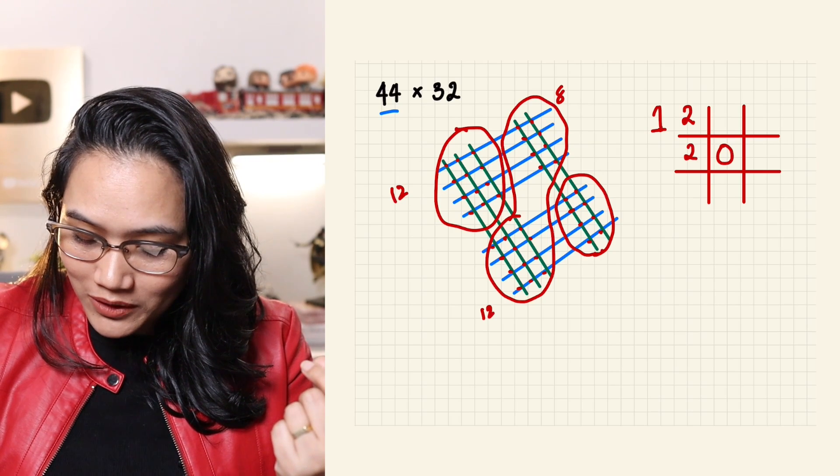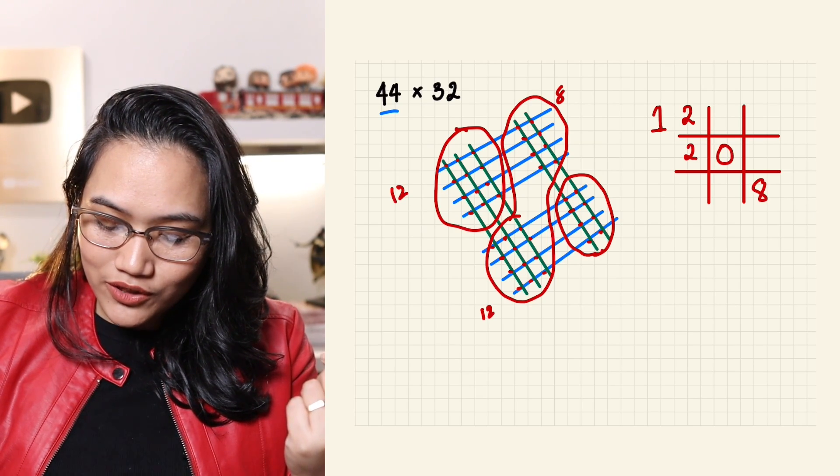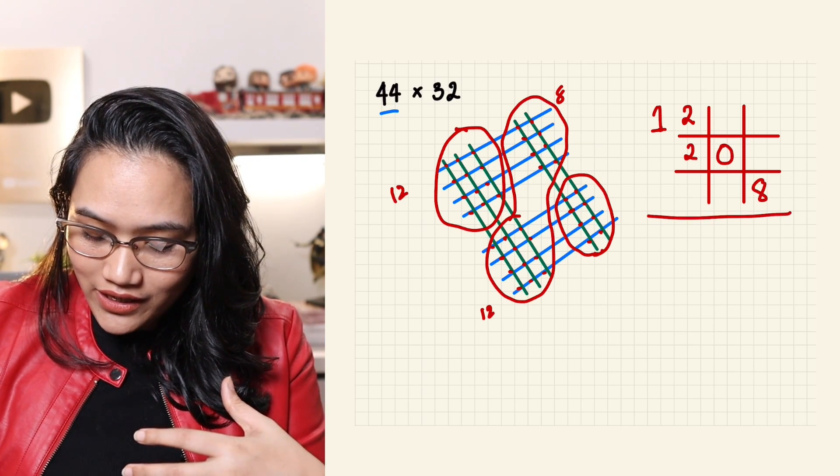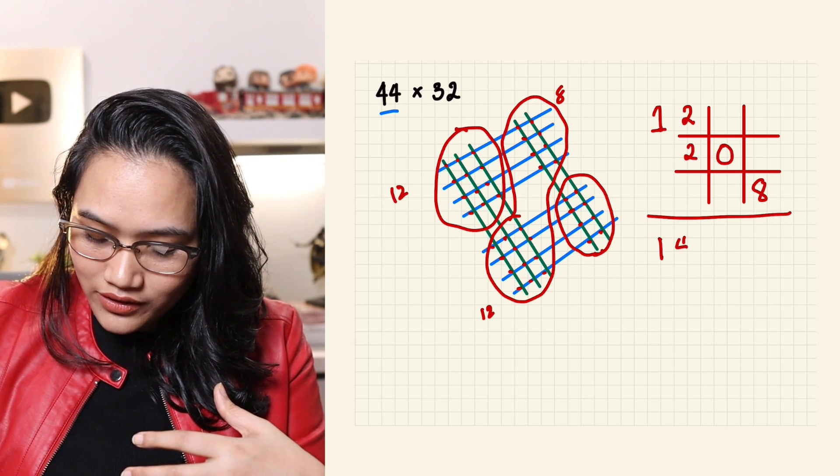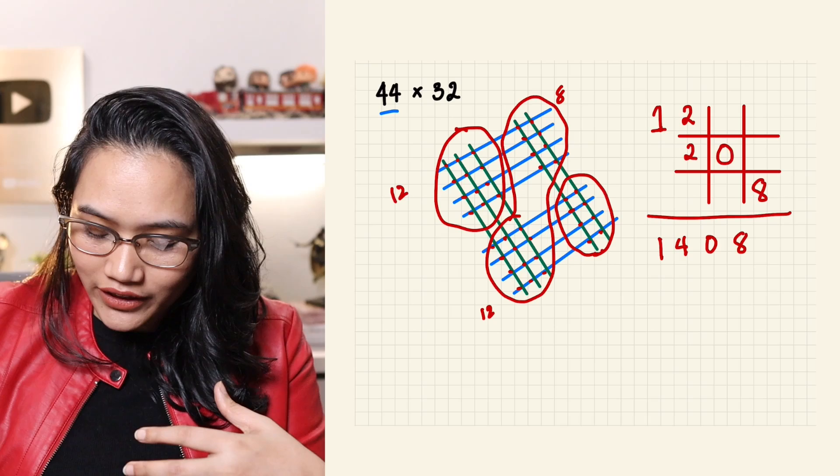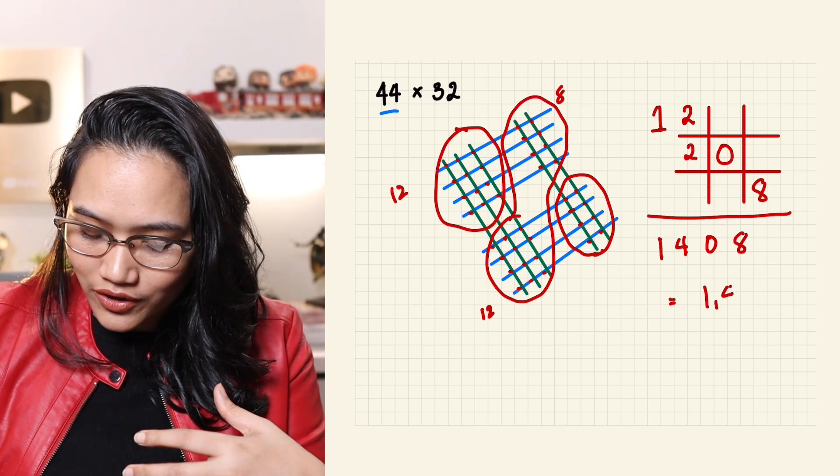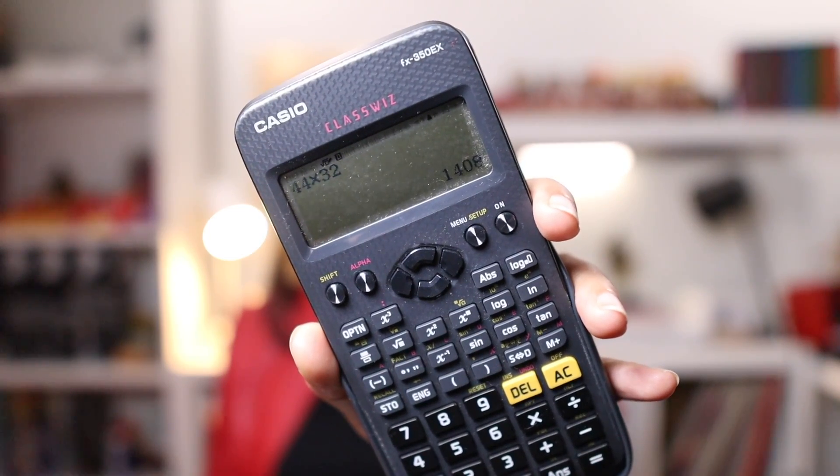This is going to be the last digit. Now, since it's just 8, no problem, we place it here. And now, we're going to just solve it vertically. So, you have 1, 2 plus 2 is 4, 0, 8. The answer is 1,408. If we use a calculator, 44 times 32 is 1,408. It's the same. Now, it's your turn. How do you solve this?